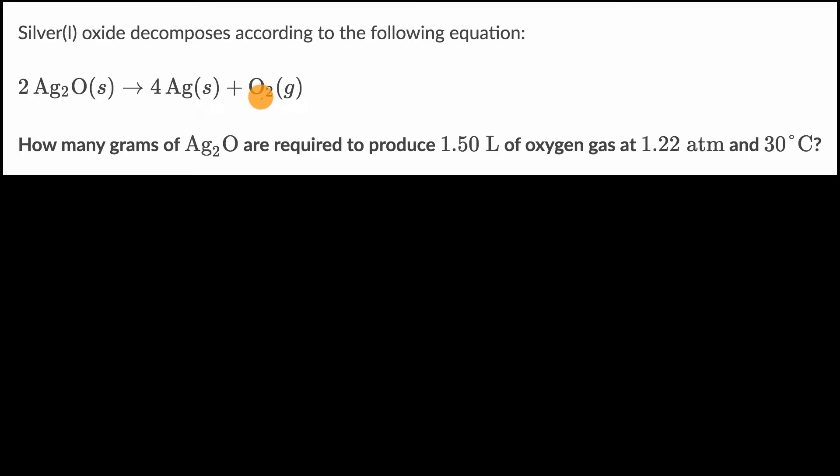But they don't tell us how many moles of molecular oxygen we're producing. They give us volume, pressure, and temperature. The ideal gas law tells us that PV = nRT. If we solve for n and divide both sides by RT, we get PV over RT equals n.